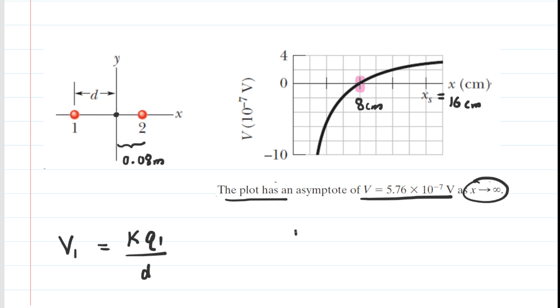So with both charges present in the picture, we can say that the sum of the electric potentials is going to equal V1, that's the potential from Q1, and then plus V2, that's the potential from Q2.